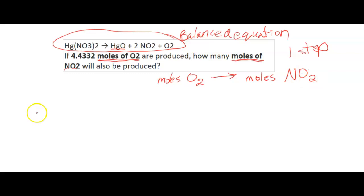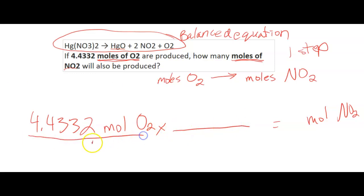So I know I have 4.4332 moles of O2. I want my moles of NO2. I look at the balanced equation and I'm going to convert. So I'm going to put this over 1. I want moles of NO2. I want to get rid of the moles of O2.